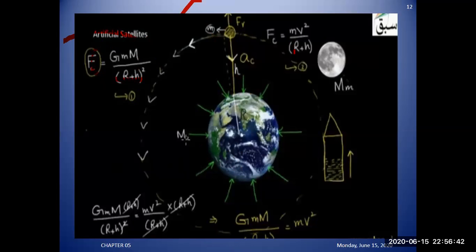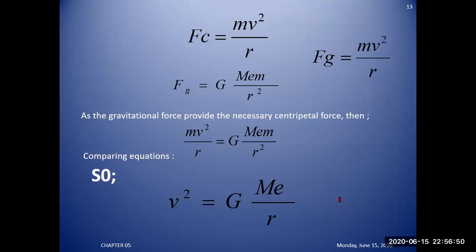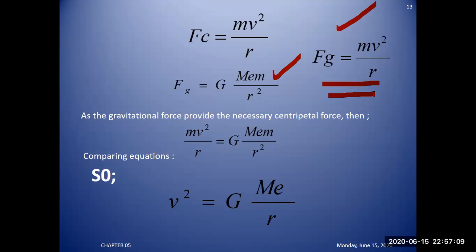Using Newton's law of gravitation, you are able to calculate the velocity required to move the object to a certain height. The formula to calculate centripetal force is: F_c equals mv squared divided by r. The formula to calculate gravitational force is: G times M_e times m divided by r squared. Gravitational force is responsible for providing the centripetal force that keeps the satellite revolving in circular motion.